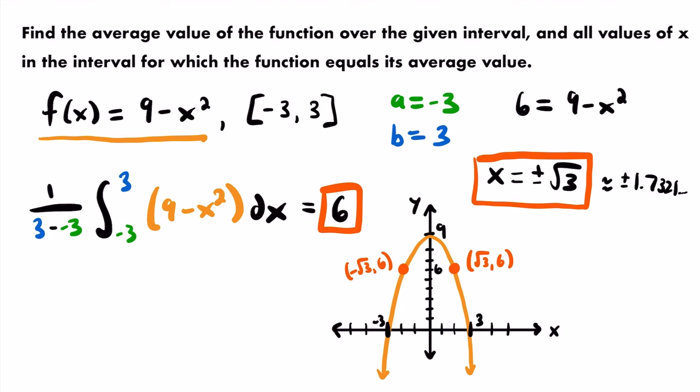That's really all we're doing when we calculate the average value of a function on a closed interval — finding the area under the curve and dividing by the difference between the bounds. And with that, this problem is complete. If you have any questions, feel free to leave those in the comments.